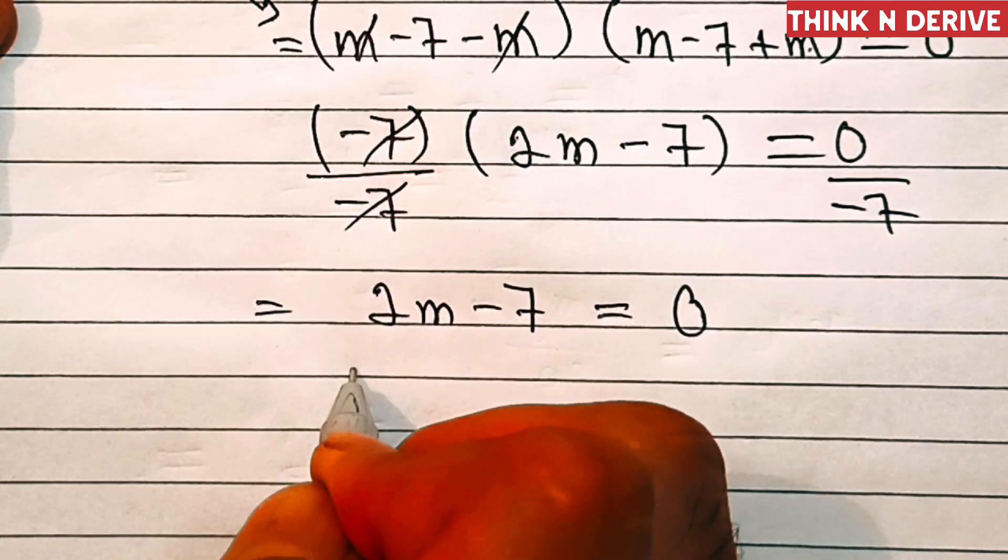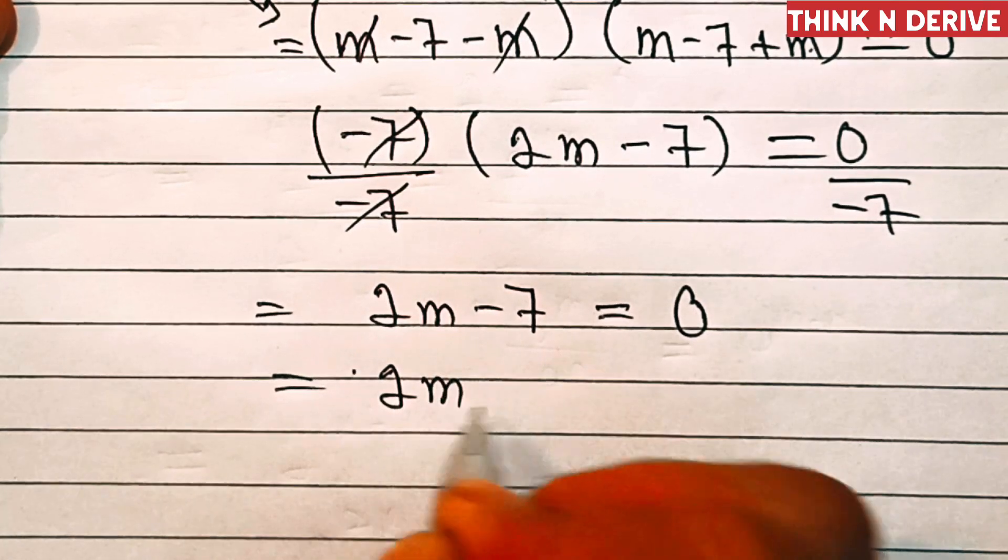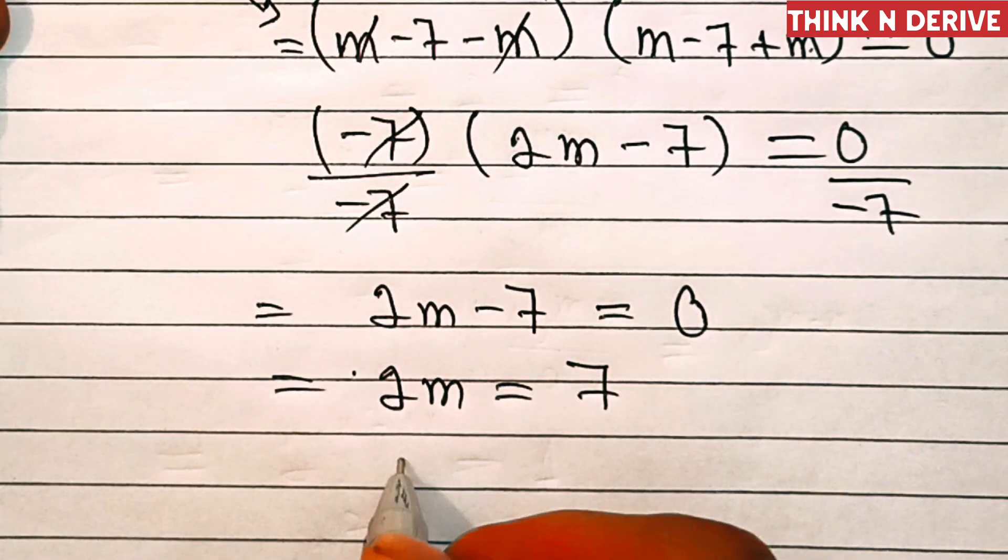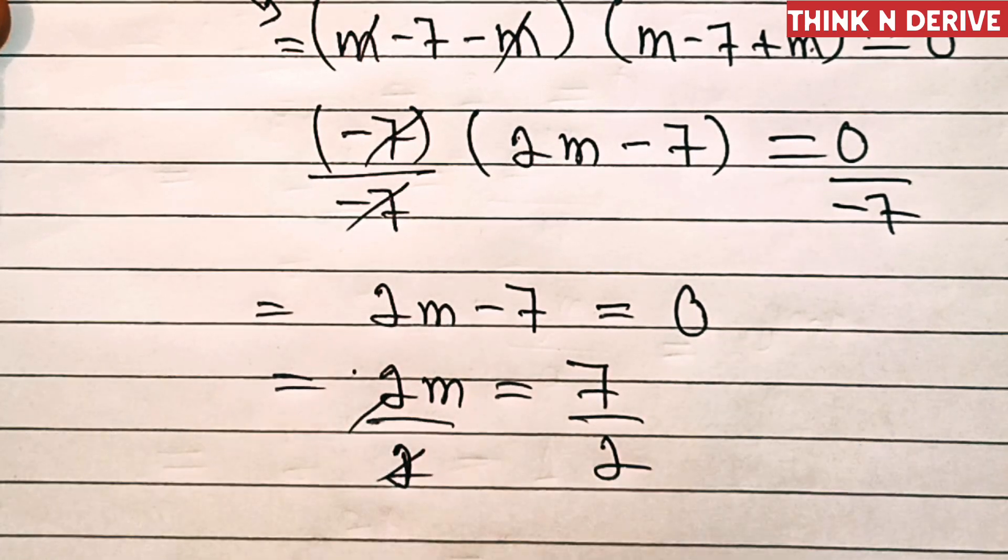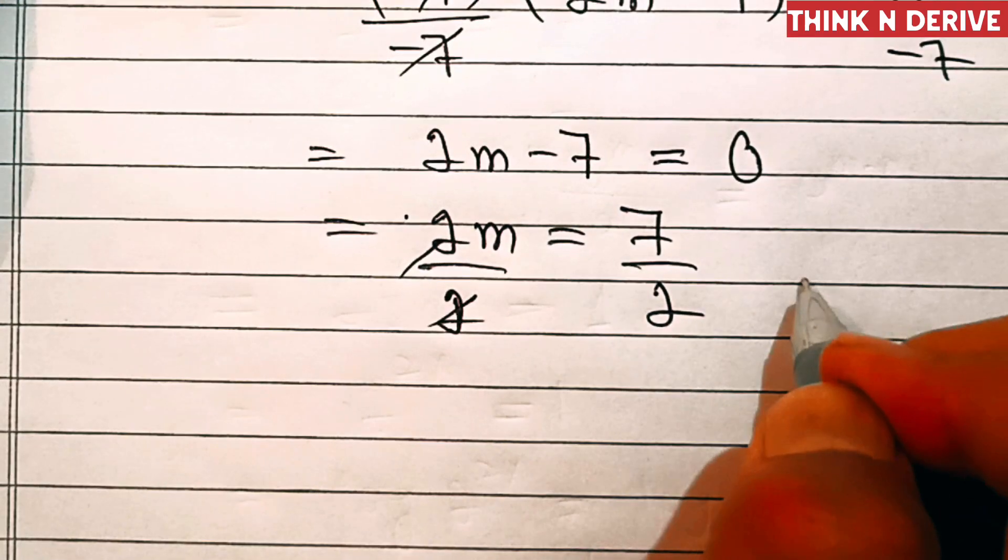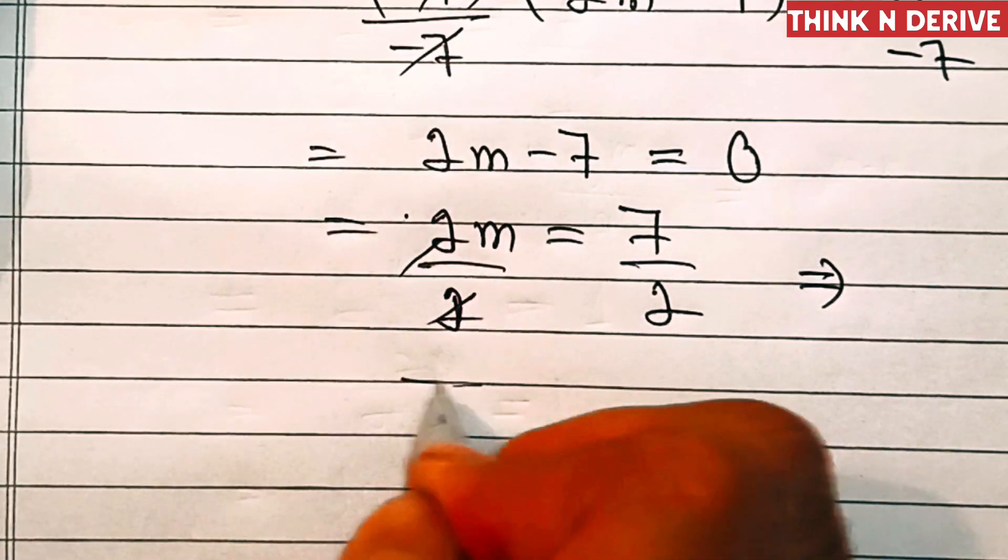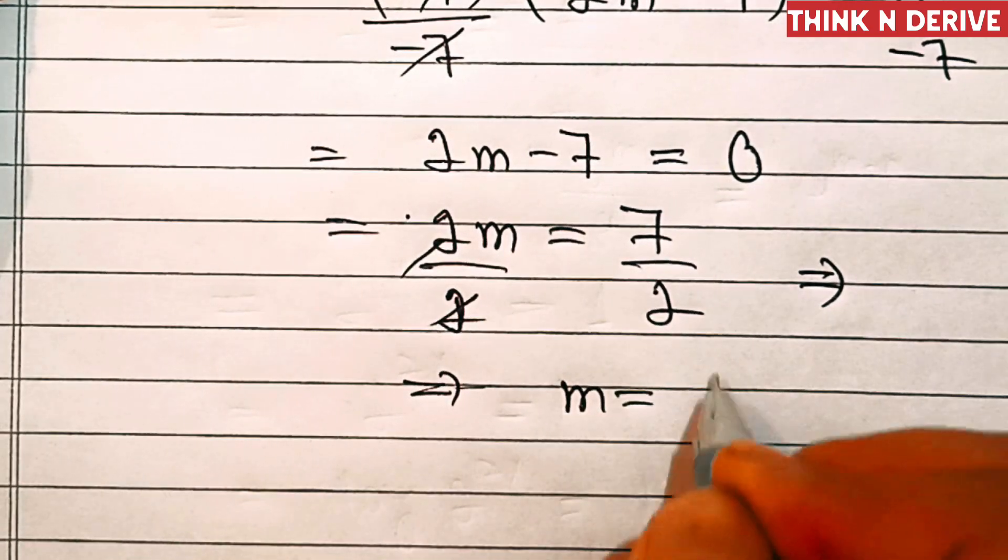So that means 2m equals 7. Now divide both sides by 2. This 2 and 2 will get cancelled out, so that implies m equals 7 by 2.